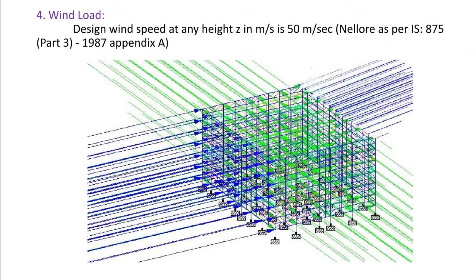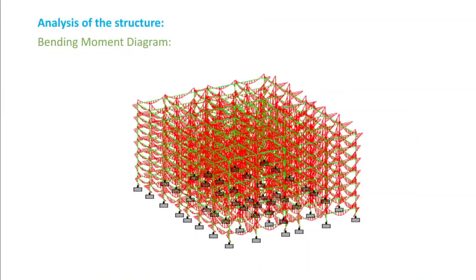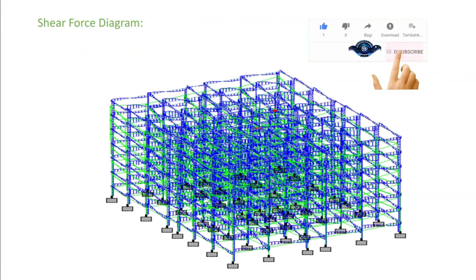We take the wind load as 50 meters per second. We follow the IS 875 codebook and this is the overall bending moment diagram and this is the shear force diagram.